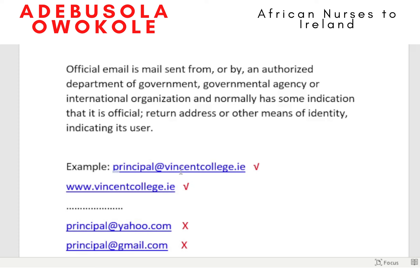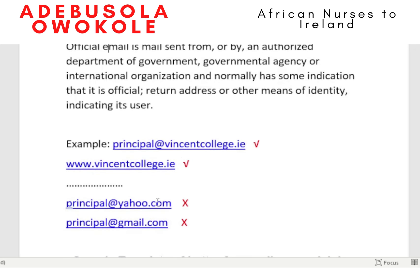They want emails that are actually official. If the principal, dean, or registrar of the institution is filling a qualification form for you, they need to include their official email. If they don't have one — if they have something like principal@yahoo.com or a personal Gmail address — they need to provide an explanation, otherwise there will definitely be a query from NMBI regarding that.